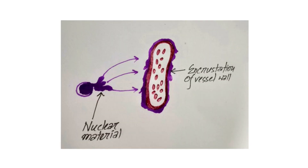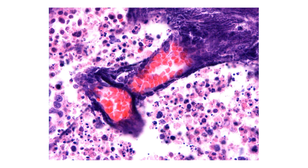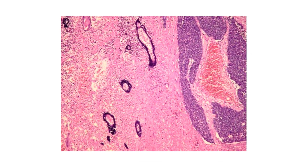Because of extensive necrosis of these cells, the nuclei disintegrate and subsequently result in release of nucleic acids. These nuclear DNA materials get deposited in the wall of small blood vessels, particularly capillaries and venules. On hematoxylin and eosin stained sections, these are seen as deeply basophilic material lacing the blood vessel walls, most often near areas of necrosis.